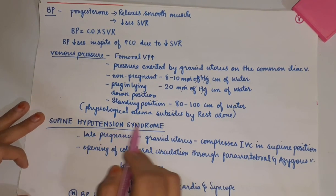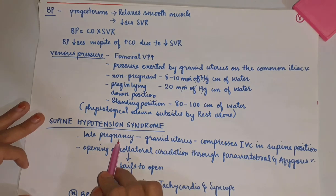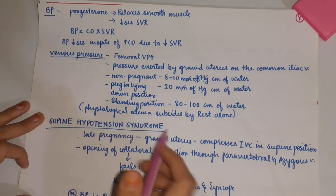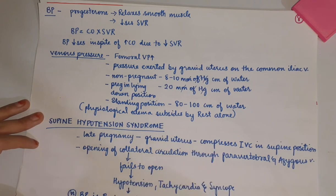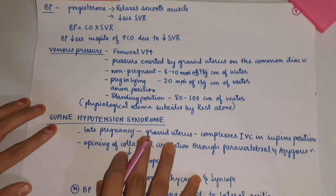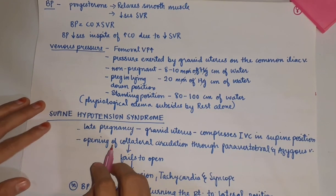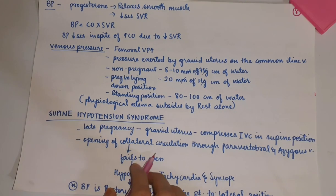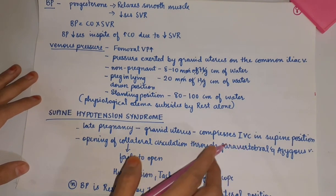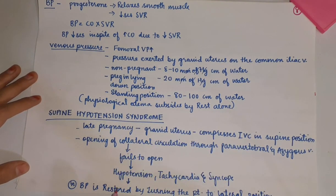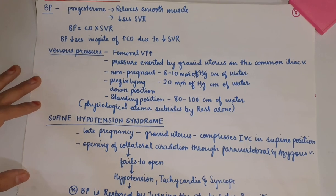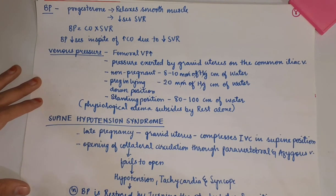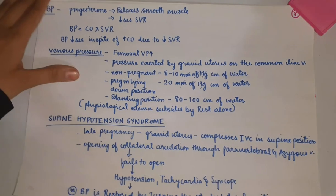Supine hypotension syndrome: in late pregnancy, the gravid uterus exerts pressure on the inferior vena cava, compressing it in the supine position. This leads to opening of collateral circulation through paravertebral and azygos vessels. Failure of opening this collateral circulation leads to hypotension, tachycardia, and syncope. Normal BP can be restored by turning the patient to the lateral position.